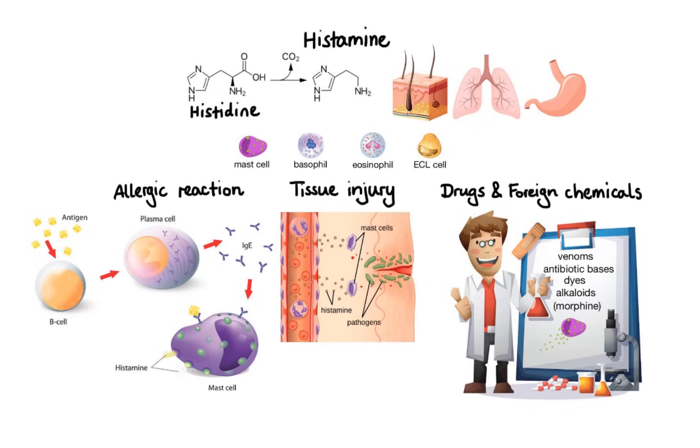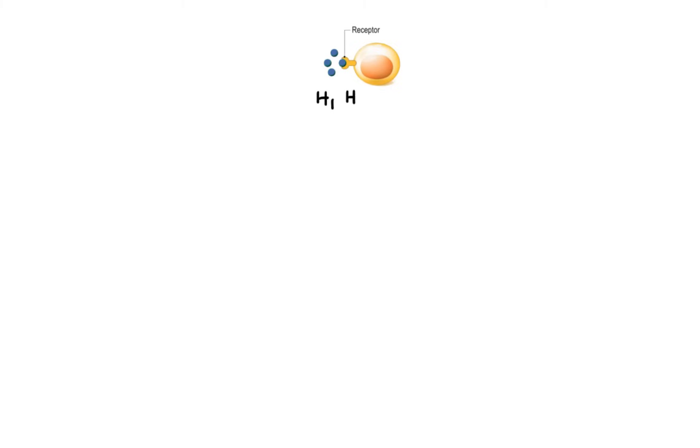So what does histamine do following its release? Histamine exerts its effects by binding to various types of histamine receptors found on many different cells throughout the body. To date, four types of histamine receptors have been identified: H1, H2, H3, and H4. In this lecture we are going to focus only on the first two types, as they are the main targets of clinically useful drugs.